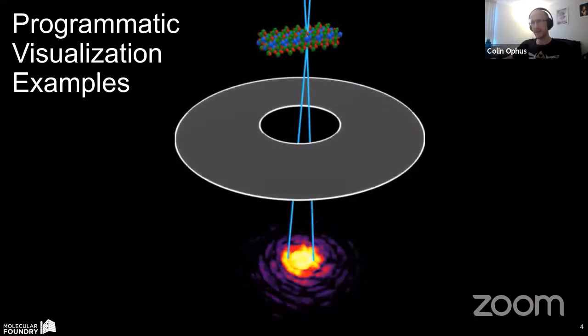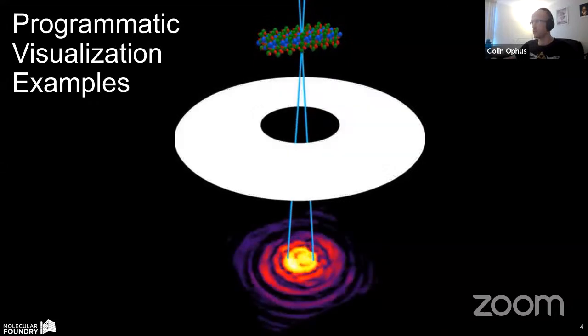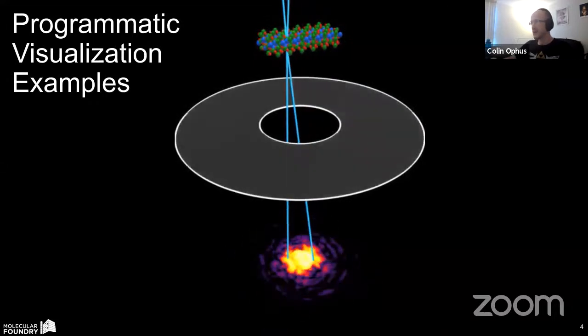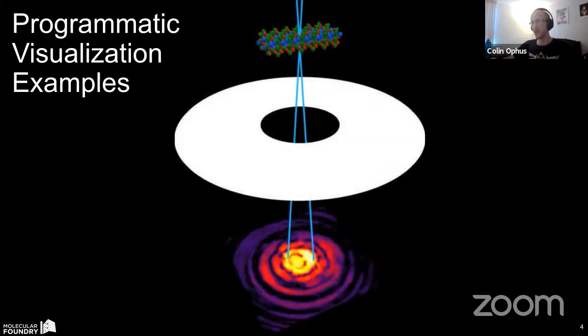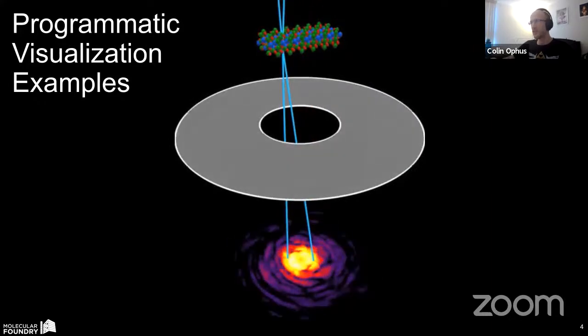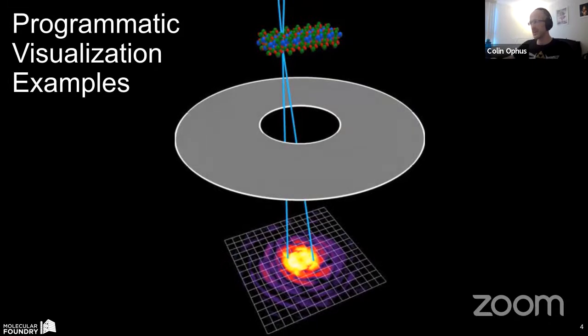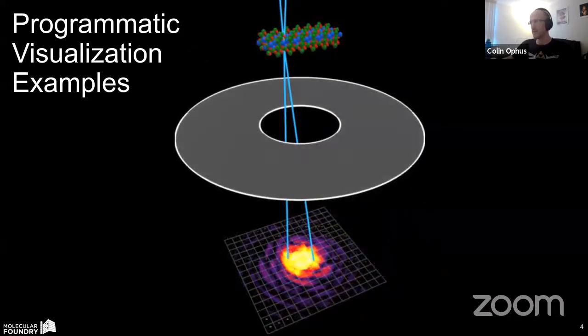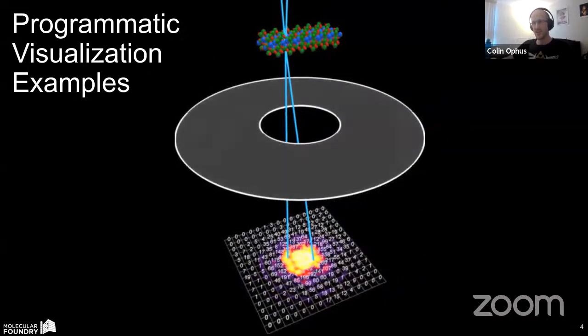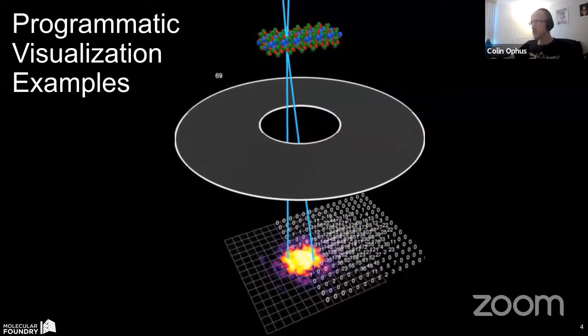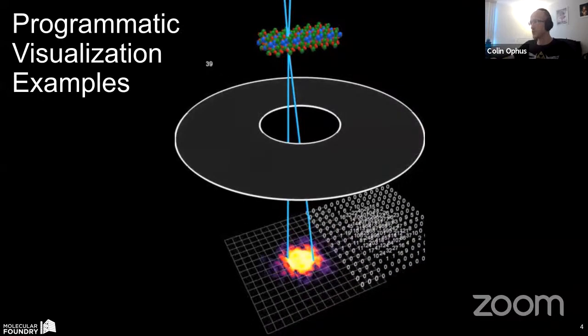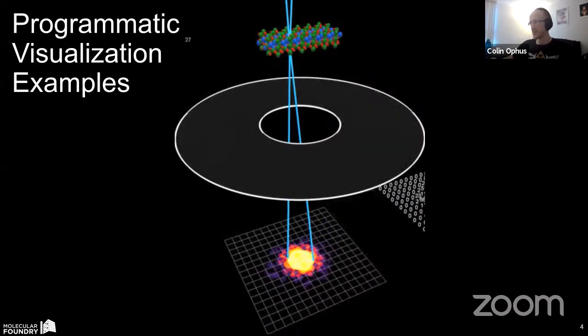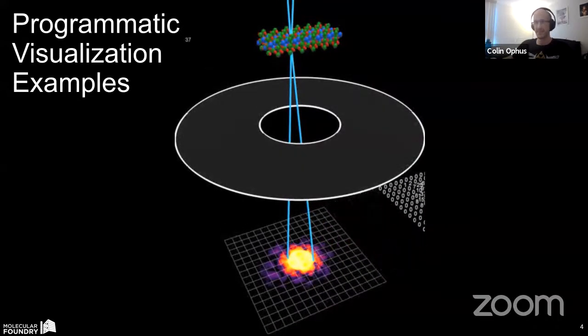Here's a slightly more complicated animation. I do a lot of scanning diffraction, 4D STEM work. And this is where I was trying to use a movie to explain the difference between recording a single probe position, integrating the intensity, or using a pixelated detector to record a full array of electron counts at each probe position here. And so again, this is a fairly straightforward programmatic visualization. But if you don't know the tricks that go into making something like this, it seems like magic.